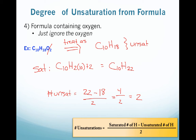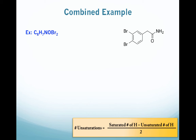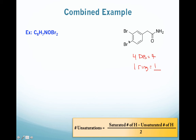Let's tie all of this together and look at a formula that contains multiple heteroatoms, and see how this correlates to a structure. Here I have both a structure and its molecular formula. Doing this visually: we have 3 carbon-carbon double bonds plus 1 carbon-oxygen double bond — that's 4 double bonds, giving 4 unsaturations. We also have 1 ring, for a total of 5 unsaturations in this structure.